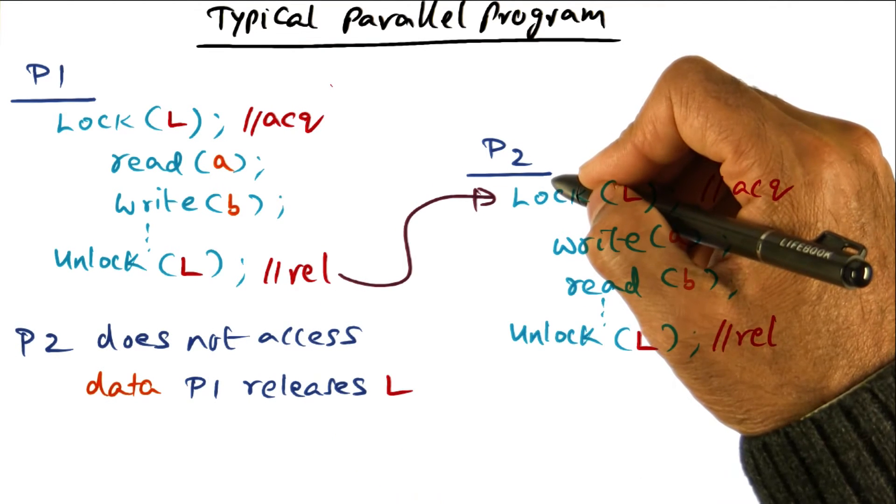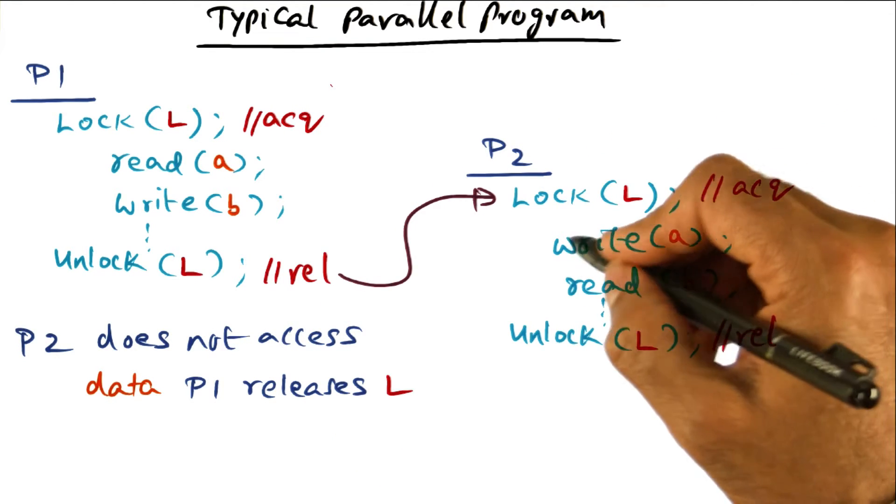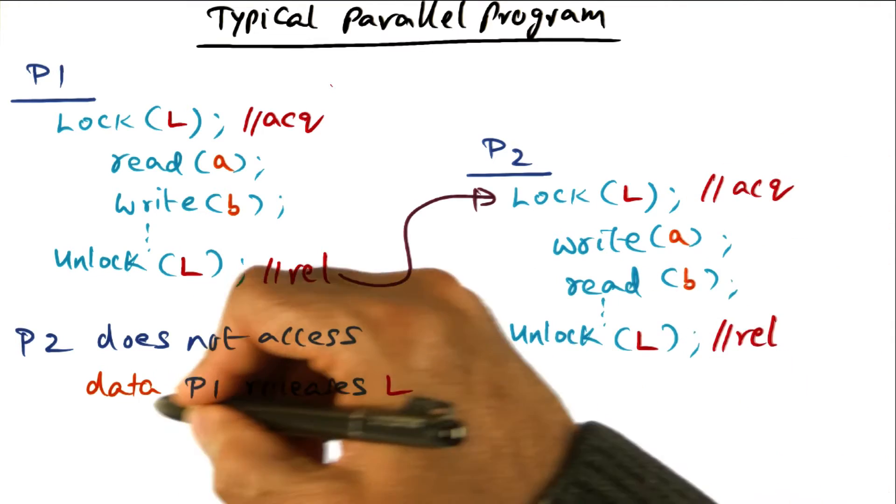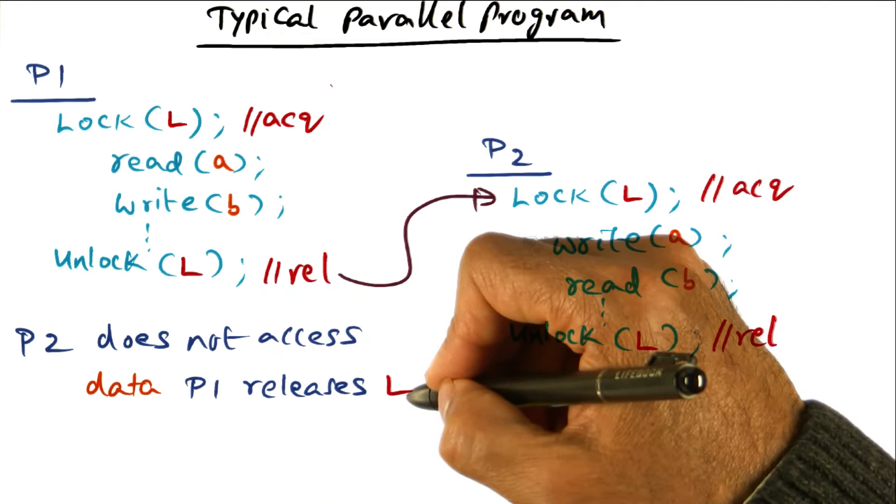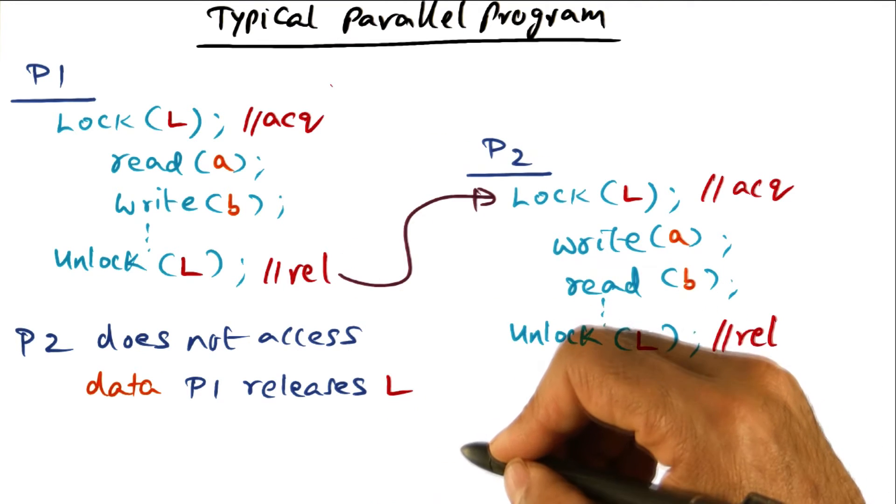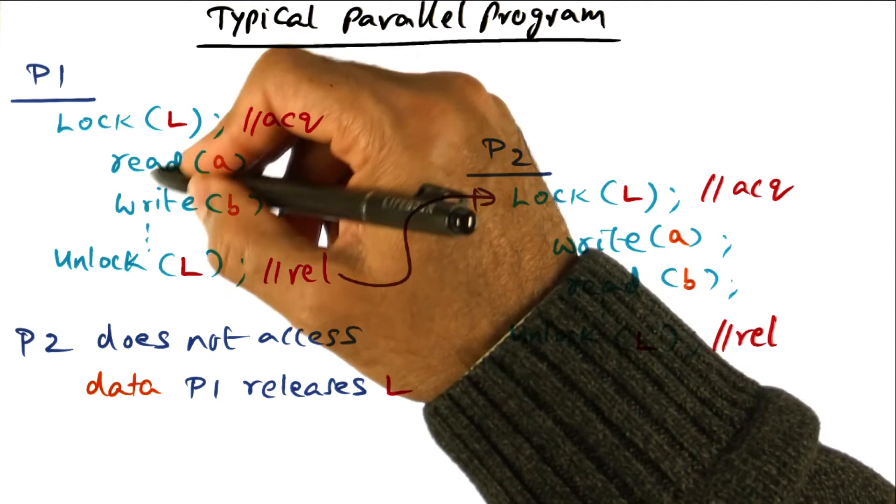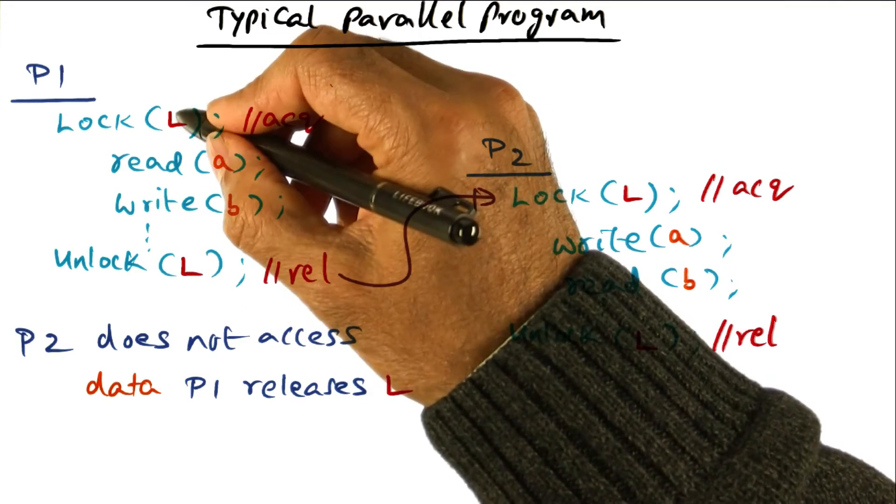So in other words, P2 is not going to access any of the data that is inside this critical section until P1 releases the lock. We know this because we designed the program, but the SC memory model does not know about the association between these data structures and this lock.